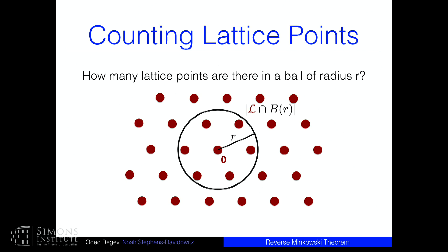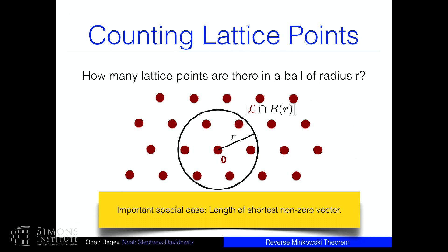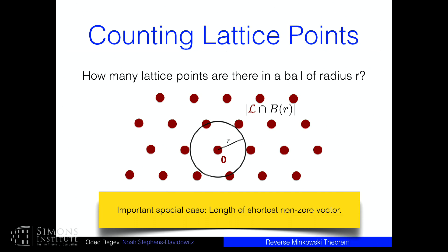We're going to be talking today about one of the fundamental geometric questions about lattices: how many lattice points are there in a ball of radius r? I'll write that as |L ∩ B_r|. For example, this ball has seven points in it. A special case of this is the length of the shortest non-zero vector in the lattice — that's just the smallest radius of a ball containing only one point.